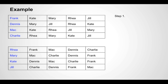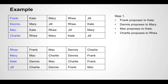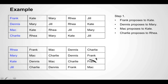Step one: the men make proposals to the women at the top of their list. Frank proposes to Kate, Dennis proposes to Mary, Mac also proposes to Kate, and Charlie proposes to Rhea. Kate has received two proposals — from Frank and from Mac — and she prefers Mac over Frank, so she rejects Frank and accepts Mac's proposal. Mary has received a proposal from Dennis and she's currently unmatched, so she accepts. Rhea has received a proposal from Charlie — and although Charlie is at the bottom of her list, she is currently unmatched, so she tentatively accepts.